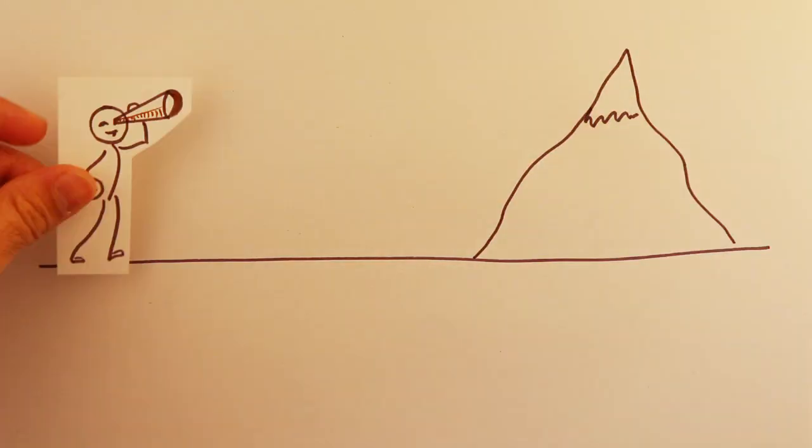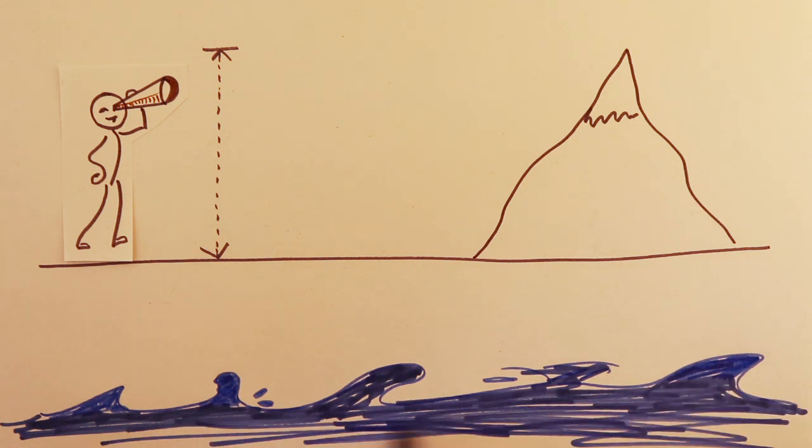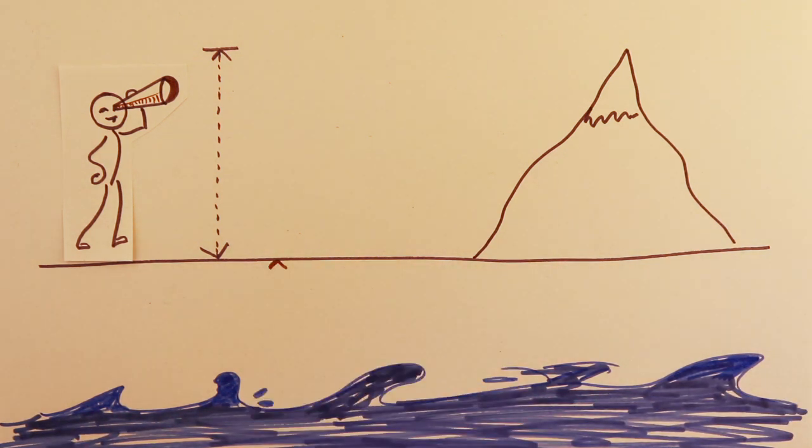But wait, this is just the height of the mountain from your position. For complete picture, you have to add the extra height, which is the location of your place from sea level. The final value you obtain is the height of the mountain with respect to sea level.